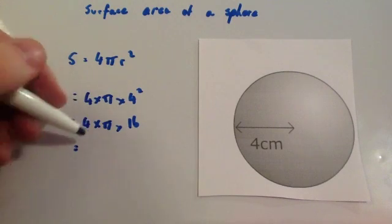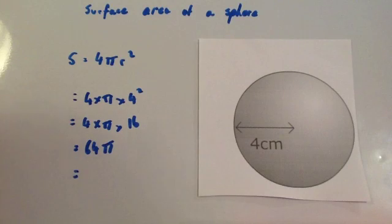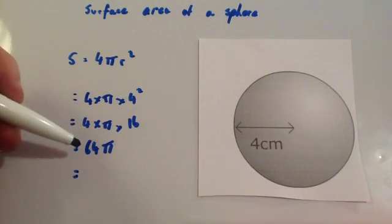Then multiply the 4 and the 16 together to get 64π. And then you just need to work that out. If it was a non-calculator question then that would be your answer.